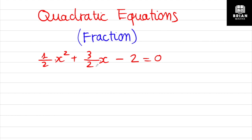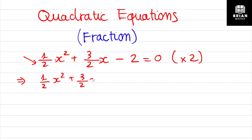The first step I want to apply for this equation is to cancel the fractional form. I will multiply both sides of this equation by two. We choose two because the denominator of these fractions is two. After multiplying, we have two times the bracket on the left and two times zero on the right.